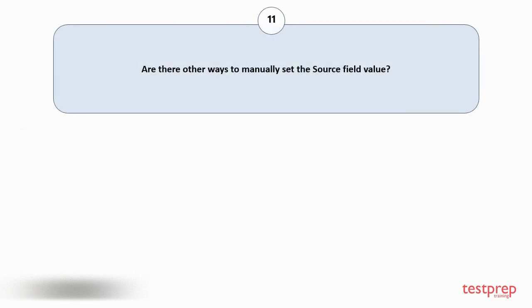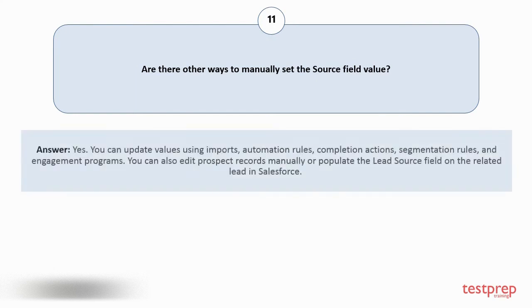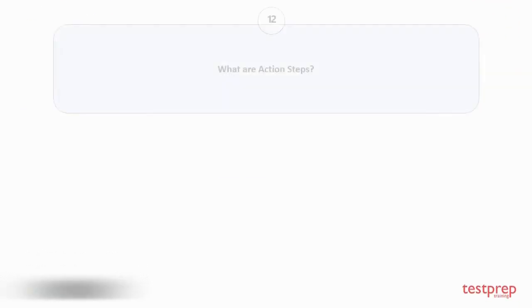Question number eleven: Are there other ways to manually set the source field value? Yes, you can update values using imports, automation rules, completion actions, segmentation rules, and engagement programs. You can also edit prospect records manually or populate the lead source field on the related lead in Salesforce.